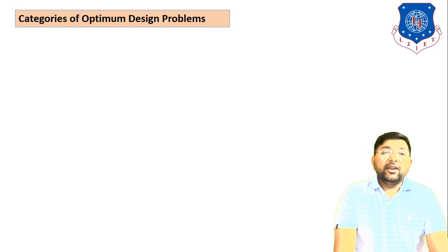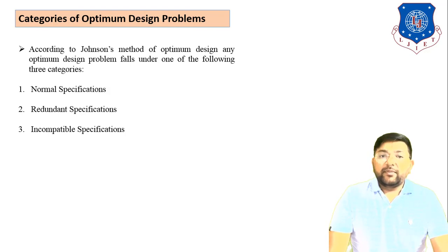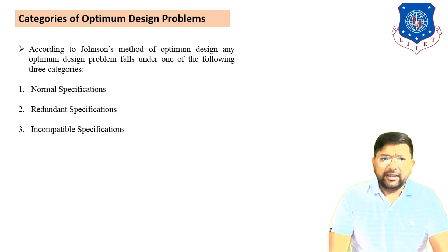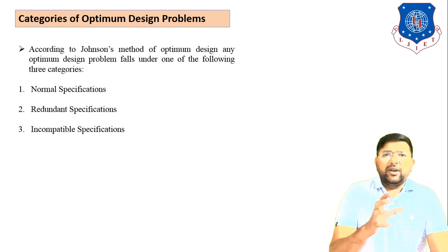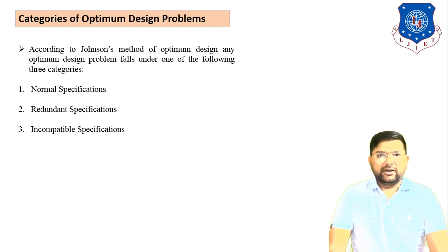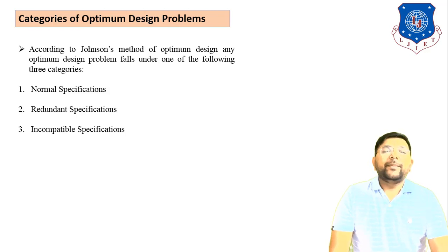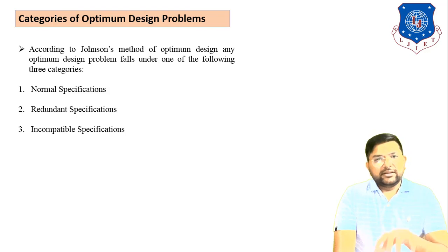Next is the Category of Optimum Design Problems — how to define the design problem according to the Johnson Method of Optimum Design. Any optimum design problem falls under one of three categories: first, Normal Specification; second, Redundant Specification; and third, Incompatible Specification. Any problem falls into one of these three categories.